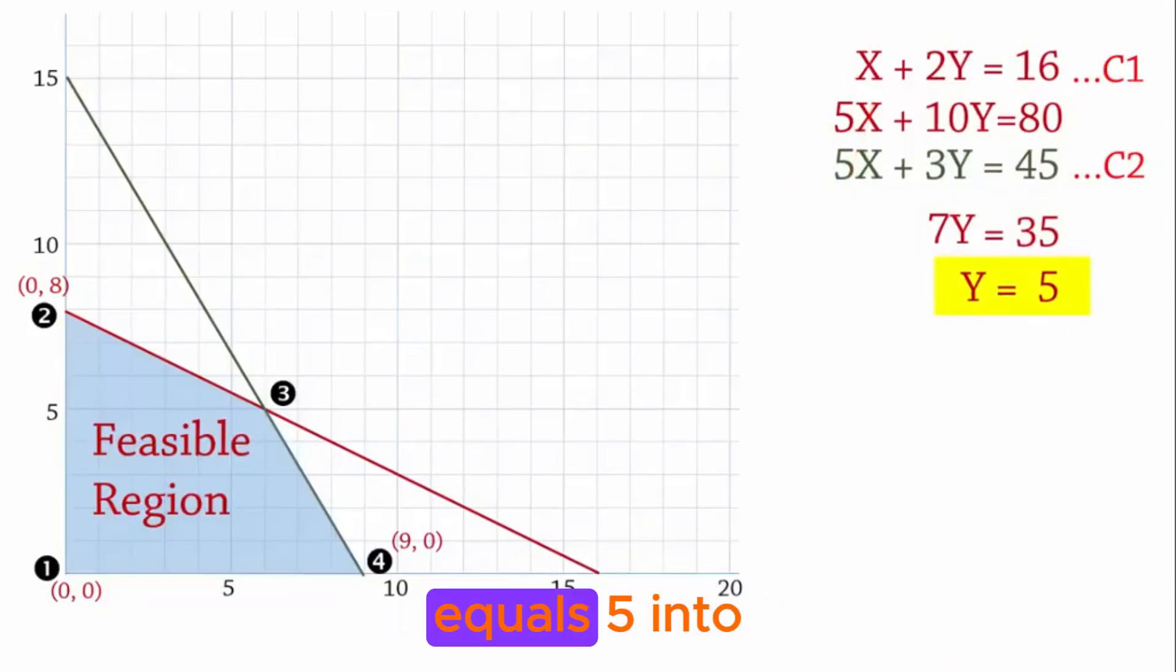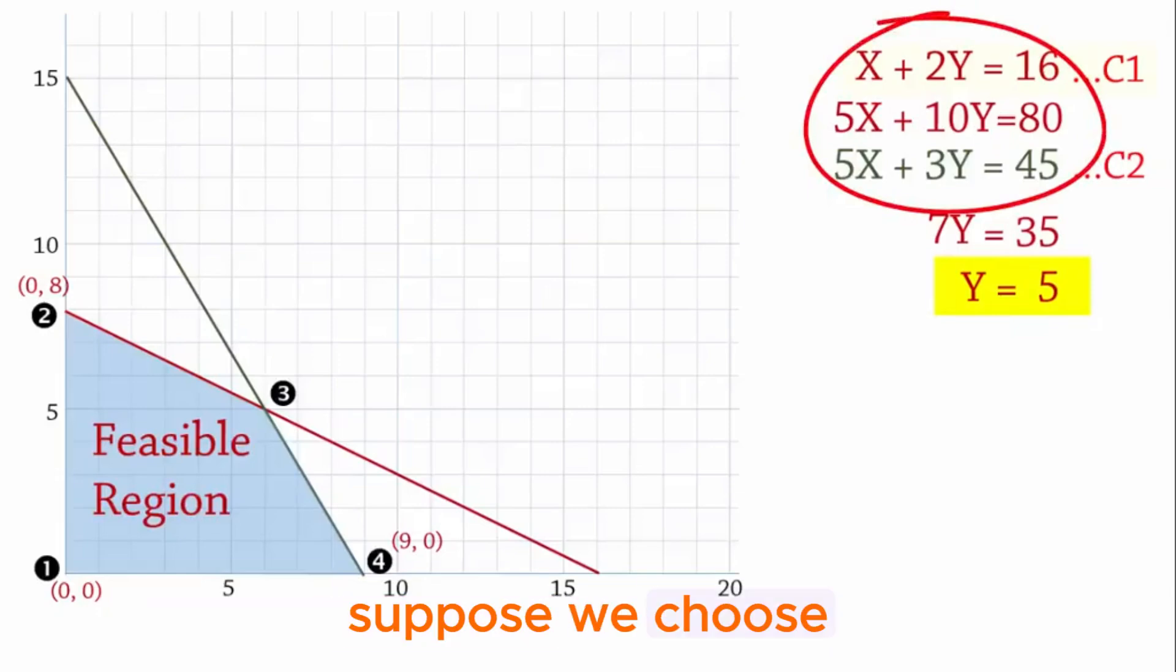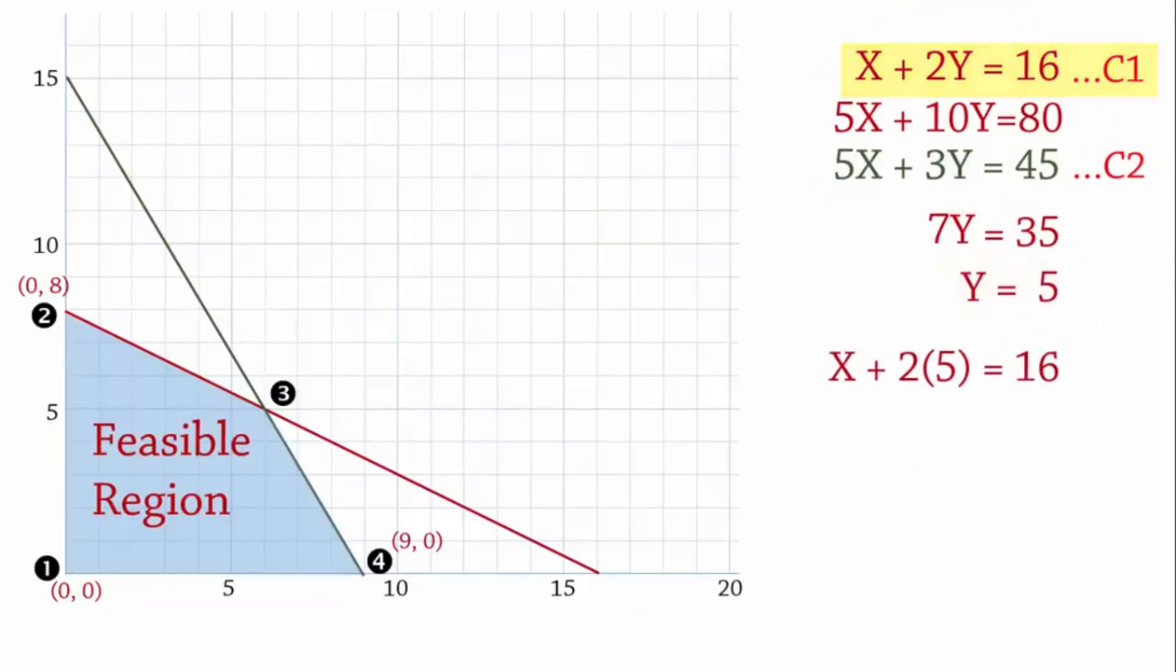To now find X, we substitute Y equals 5 into any of these 3 equations. Suppose we choose C1. Then we have X plus 2 times 5 equals 16. That is, X plus 10 equals 16, X equals 16 minus 10, and X equals 6. So the XY coordinates for extreme point 3 are indeed 6 and 5.